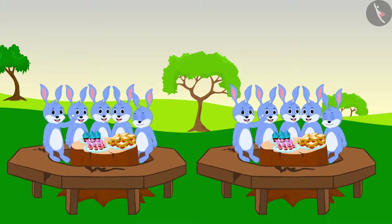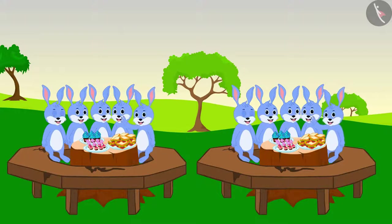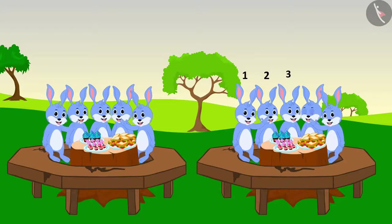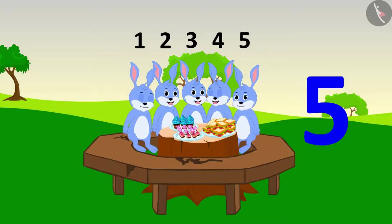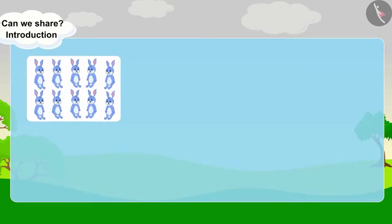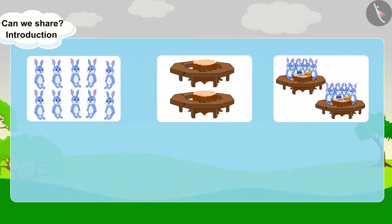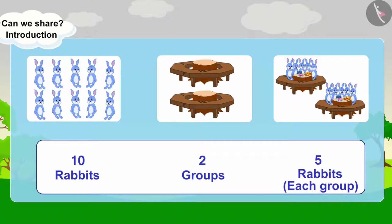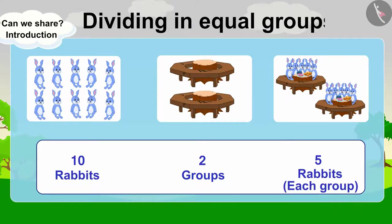There are 10 rabbits and they are sitting in two groups. Each group has 1, 2, 3, 4, 5 rabbits seated in them. A total of 10 rabbits are seated in two groups, each group having 5 rabbits. It is called dividing in equal groups.